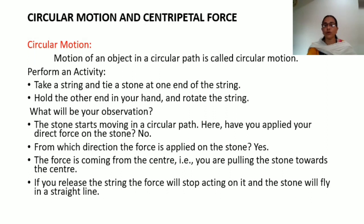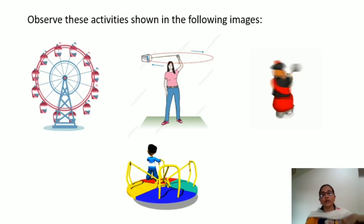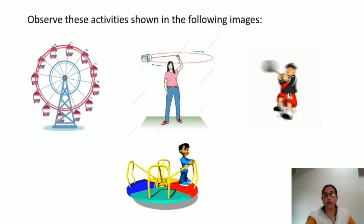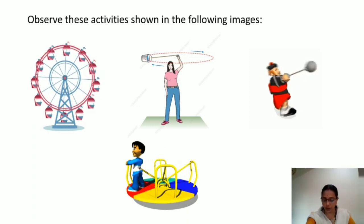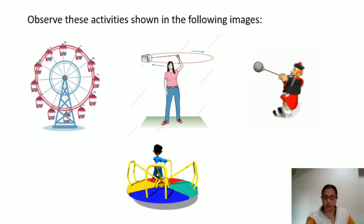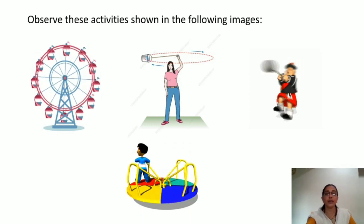Here, have you applied your direct force on the stone? No. From which direction is the force applied on the stone? The force is coming from the center. That is, you are pulling the stone towards the center. If you release the string, the force will stop acting on it and the stone will fly in a straight line. In this activity, the force is seeking from the center. Therefore, the force acting on an object moving along a circular path is directed towards the center of the circle and is called centripetal force.